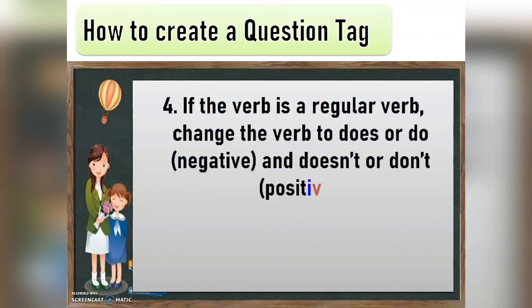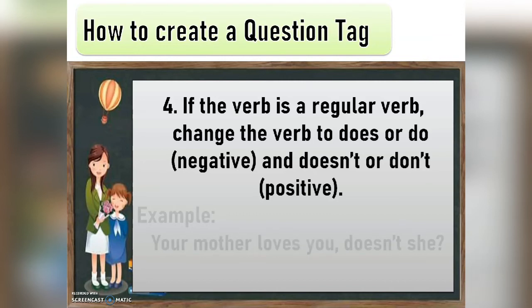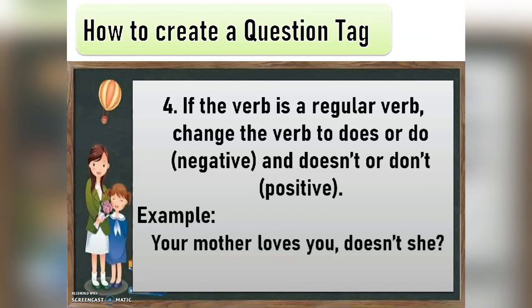If the verb is a regular verb, we have to change the verb to 'does' or 'do' if the verb is negative, and we have to change it into 'doesn't' or 'don't' if the verb is positive. Example: 'Your mother loves you, doesn't she?' As you can see, in the statement 'your mother loves you,' the regular verb is positive, which is 'loves,' that's why we use the word 'doesn't.' And we have to change the subject into its pronoun form.